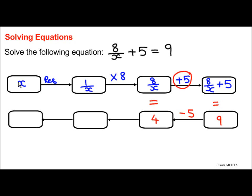Now dividing by 8 because that's the opposite of multiply by 8. So 4 is divided by 8, so I have 4 over 8.